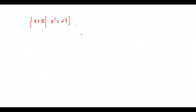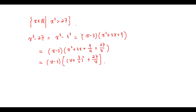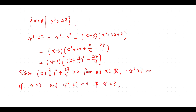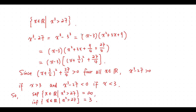Consider this set. We see that x³ minus 27 equals this one. The supremum of this set equals √6. Since this factor is greater than 0 for all x in R, x³ minus 27 is greater than 0 if x is greater than 3, and x³ minus 27 is less than 0 if x is less than 3. So, the supremum of this set is infinity and the infimum of this set equals 3.